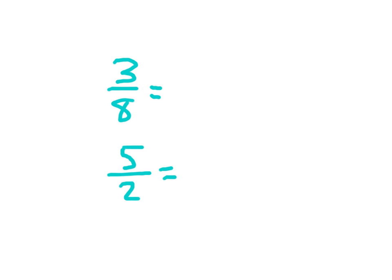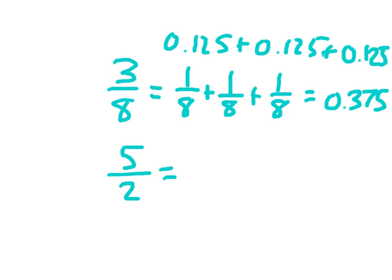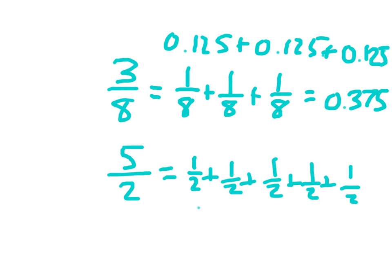If we remember that one eighth is 0.125, we could break up three eighths into one eighth plus one eighth plus one eighth, which gives decimal equivalence of 0.125 plus 0.125 plus 0.125, equaling 375 thousandths. For five halves, that's 0.5 five times — five times five is 25, then place the decimal point, giving 2.5. Or by adding: 0.5 and 0.5 is one, plus another half gives two and one half, written as 2.5.